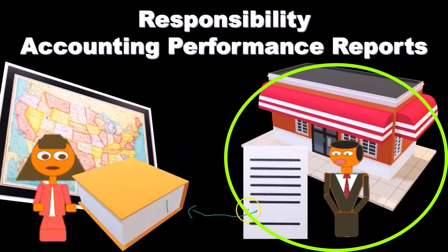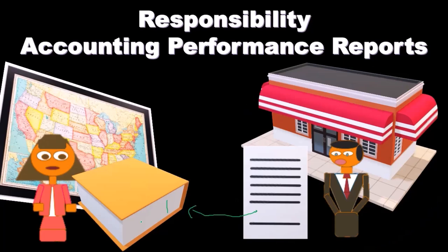The store level has a lot of detail about the costs they control. Those are summarized and sent to the regional office. The regional office has less detail for each store but is ultimately in charge of more controllable costs overall.